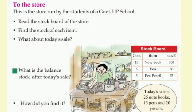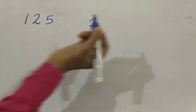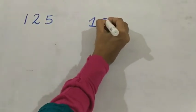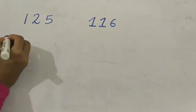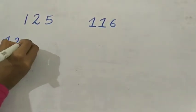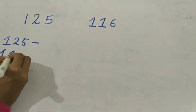Now, I am going to show you some numbers and let us subtract those numbers. My first number is 125 and my next number is 116. I am going to subtract 116 from 125. That is 125 minus 116.